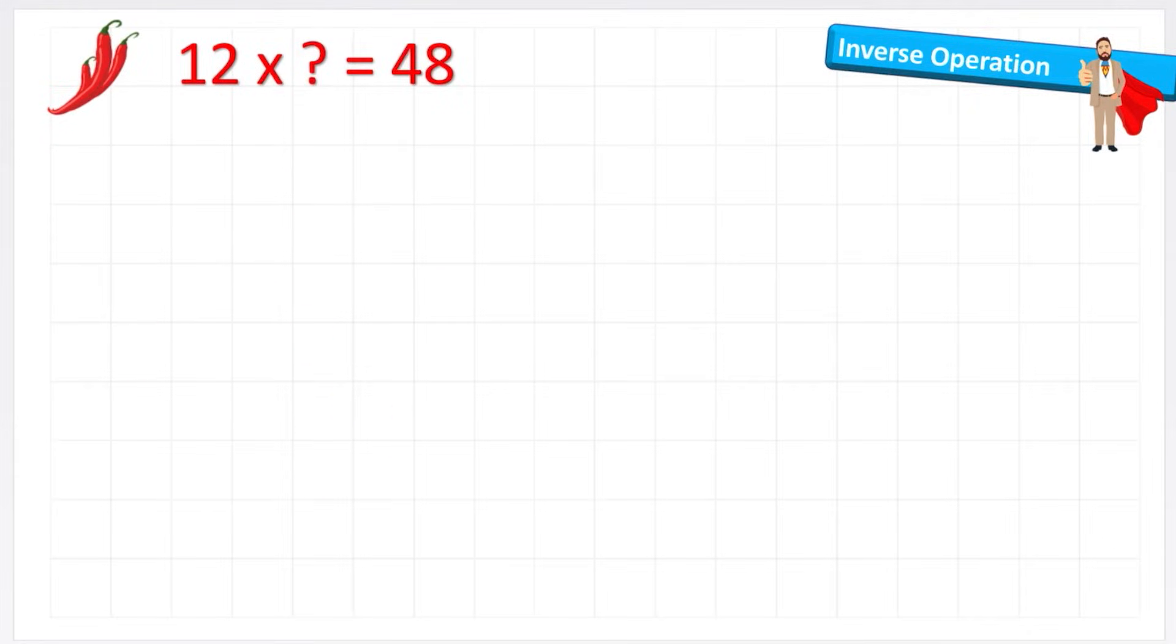So let's use that knowledge to try and help us with this missing number fact then. So here I have a question that says 12 times something equals 48. And this is a very common question that you're going to see in exams. So I can see this is a multiplication question. So I know that this number and this number will both be smaller than my 48. So therefore, for a division question, I'm going to put my 48 at the start.